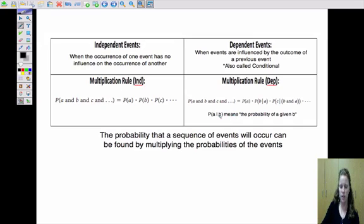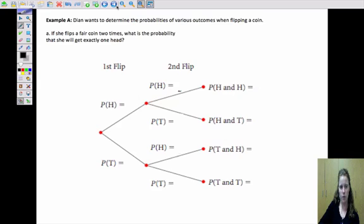So the probability of the sequence of events will occur can be found by multiplying those probabilities. And we'll look at a few examples where we need to multiply. So if we are looking at flipping a coin, if we flip a fair coin two times, what is the probability that she will get exactly one head?